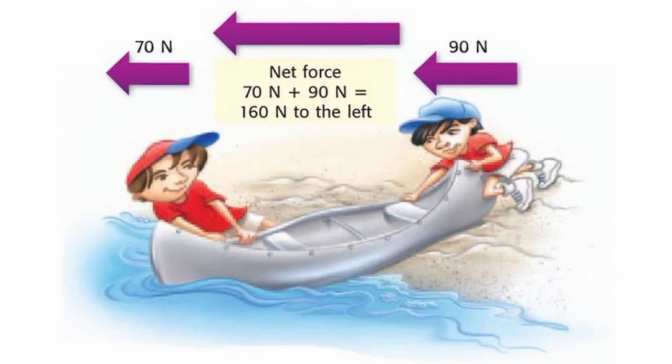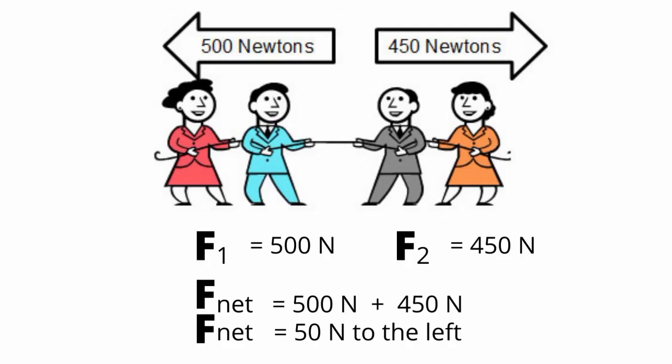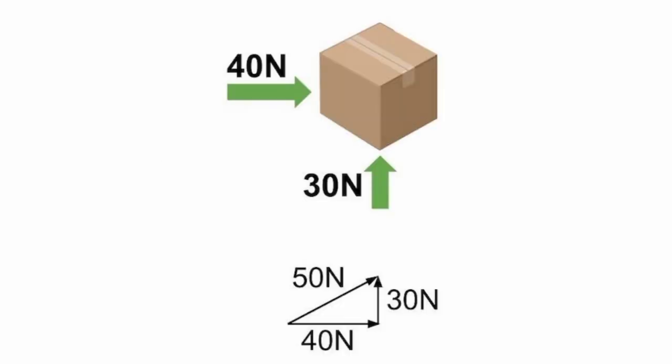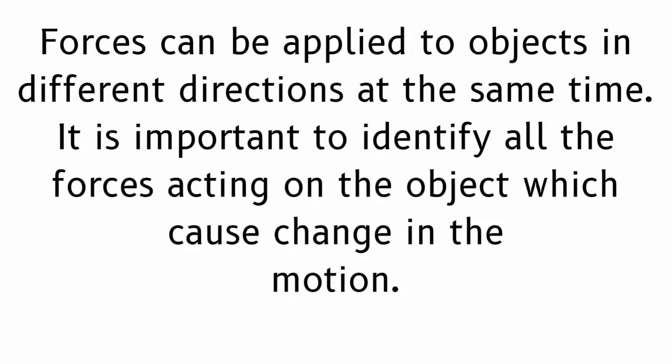In a moving object, a net force will increase its velocity when the force is in the same direction of its motion. If the net force is in the opposite direction of the object's motion, the force will reduce the object's velocity. When the net force acts sideways on a moving object, the direction of the object's velocity changes. Forces can be applied to objects in different directions at the same time.